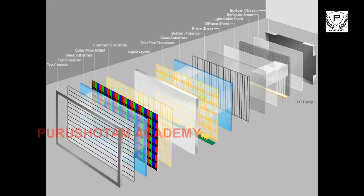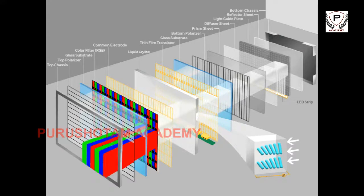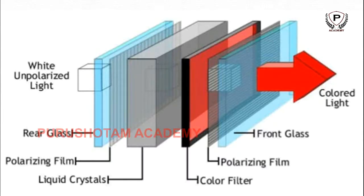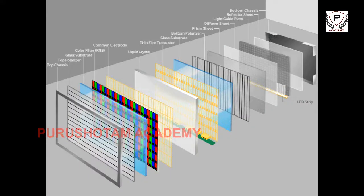LCD stands for Liquid Crystal Display and technically, both LED and LCD TVs are liquid crystal displays. The basic technology is the same in that both television types have two layers of polarized glass through which the liquid crystals both block and pass light. So really, LED TVs are a subset of LCD TVs.